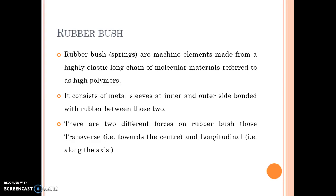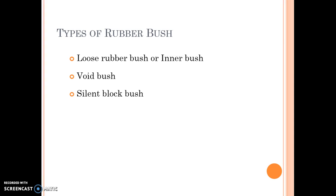As I have discussed, the rubber bush is a small mechanical component. In some machine element books, we refer to it as a spring. There are basically two different forces acting on the rubber bush: transverse loading and longitudinal loading. It is manufactured by bonding rubber with metal sleeves using bonding materials. There are three basic types of rubber bush. The first one is a loose rubber bush — a cylindrical rubber material only. The second is a void bush — a cylindrical metal piece bonded with rubber having some voids in between. The third one is a silent block bush, which we are going to study.